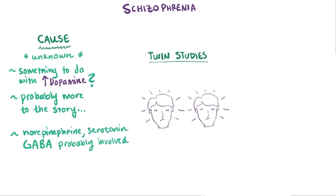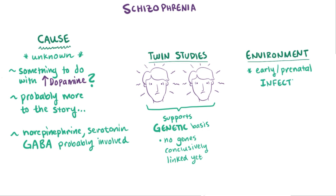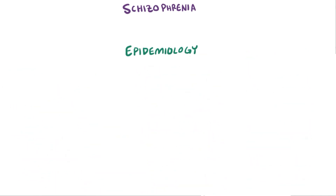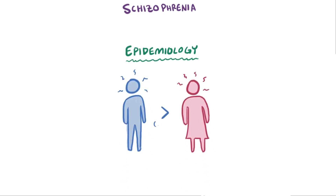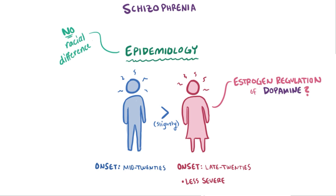Twin studies have shown support for a genetic basis as well, even though there haven't been any specific genes conclusively linked to schizophrenia yet. Environmental factors like earlier prenatal exposure to infection and certain autoimmune disorders like celiac disease have also been linked with schizophrenia. Schizophrenia seems to happen slightly more in men than in women, with onset in the mid-20s for men but late-20s for women, and the clinical signs are often less severe in women. Some studies suggest this difference might be due to estrogen regulation of dopamine systems, and there doesn't seem to be any difference among race.